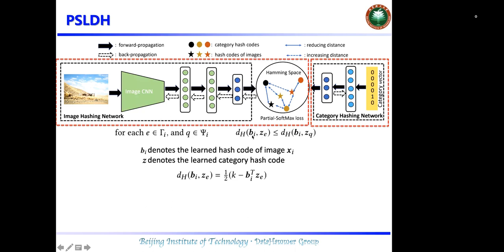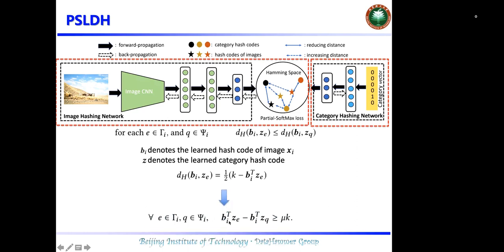D_H denotes the Hamming distance between hash codes, which can be formulated as shown. Thus, we can further reformulate the data inequality into this form.